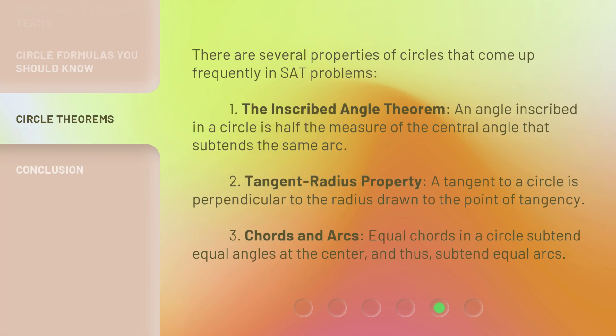There are several properties of circles that come up frequently in SAT problems. 1. The Inscribed Angle Theorem: an angle inscribed in a circle is half the measure of the central angle that subtends the same arc.